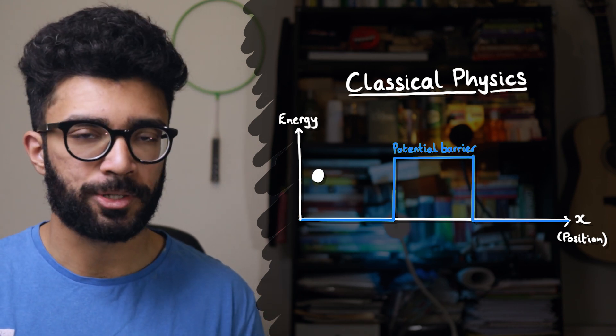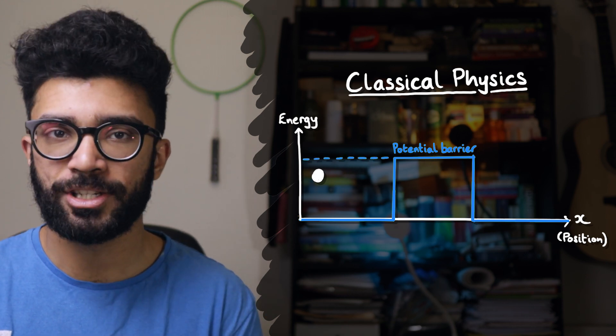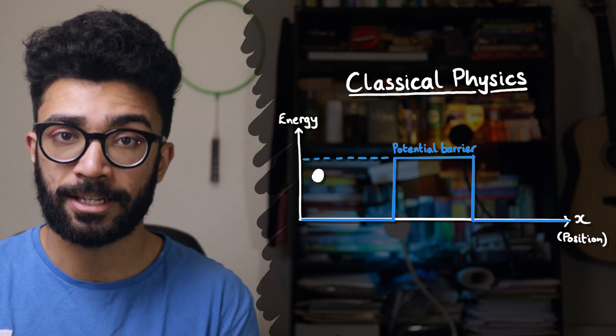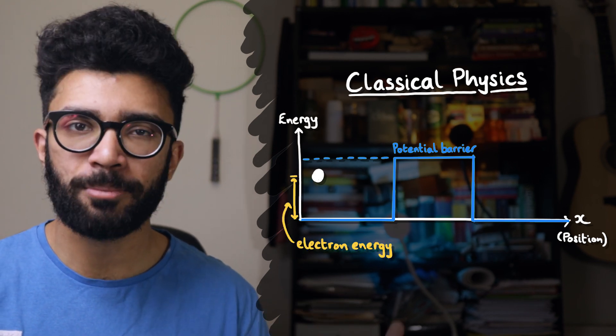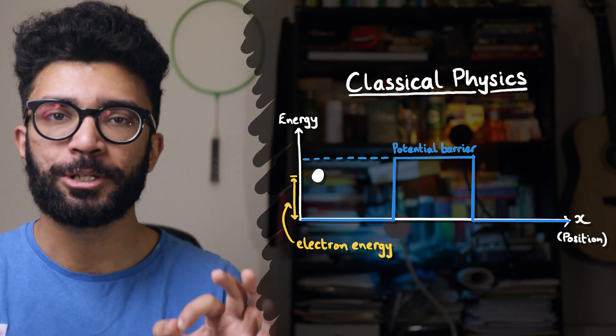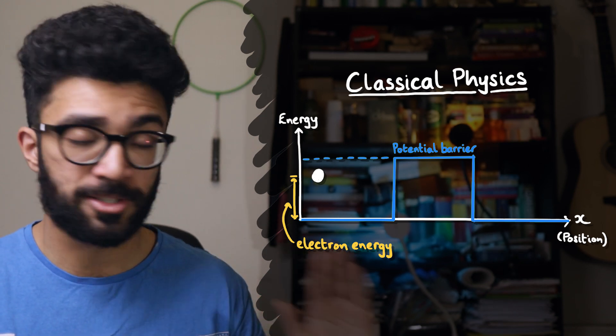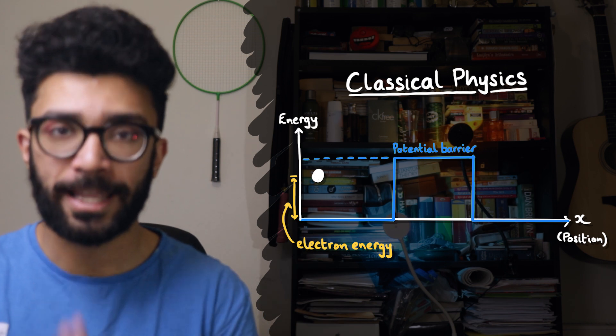And on the vertical axis, we're plotting energy, whether that's the energy of the potential barrier that the electron is encountering, or the energy of the electron itself. Again, if you're not too sure what I mean by all of these things, it doesn't matter. All you need to know for this video is that on the horizontal axis, we've got position, and on the vertical axis, we've got energy.